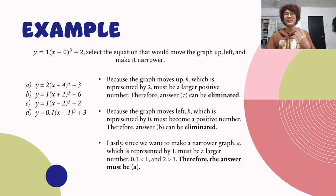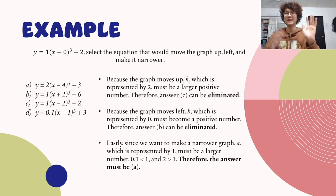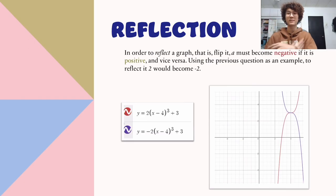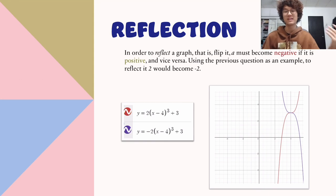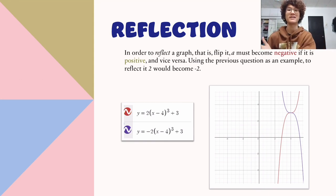To reflect a cubic function, a becomes a negative number. So if a was previously 3, then to reflect it, a becomes -3.